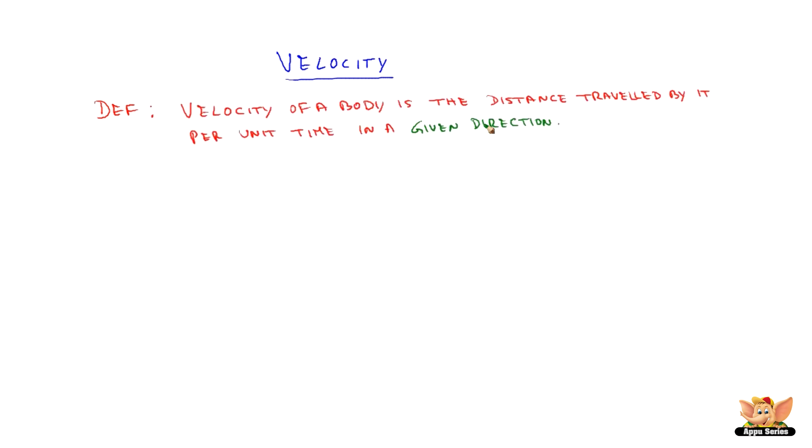Velocity of a body is the distance travelled by it per unit time in a given direction. Hence we say velocity represented as V is equal to distance travelled in a given direction which is missing in the speed.